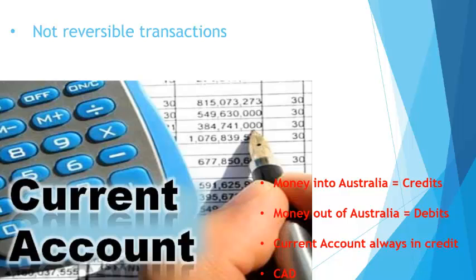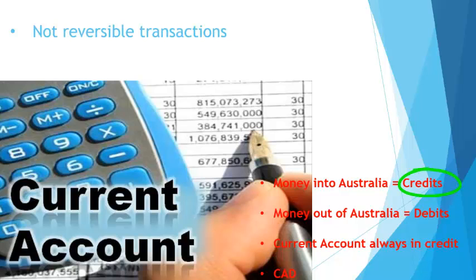The first thing you realise with the current account is that they are looking at transactions which are not reversible. For example, if I pay interest, that's a one-way thing. If I receive dividends, that's a one-way thing. Money that comes into Australia we determine as credits — they're the good things. And money going out of Australia we call debits. The current account has always been in deficit for at least the last 30 years, and it's also called CAD — Current Account Deficit — for short.